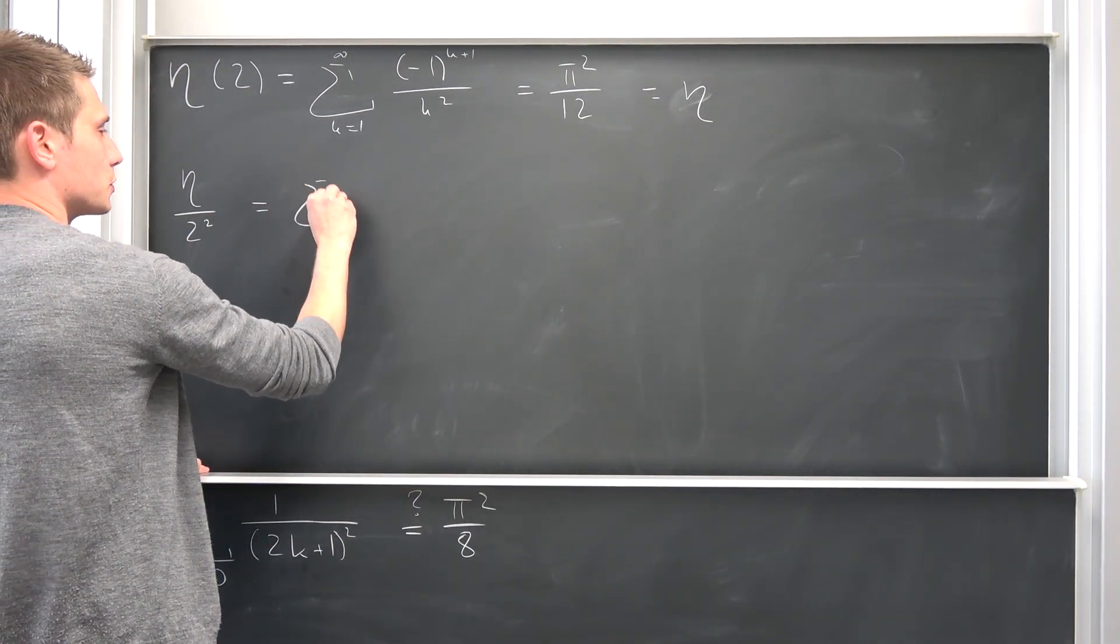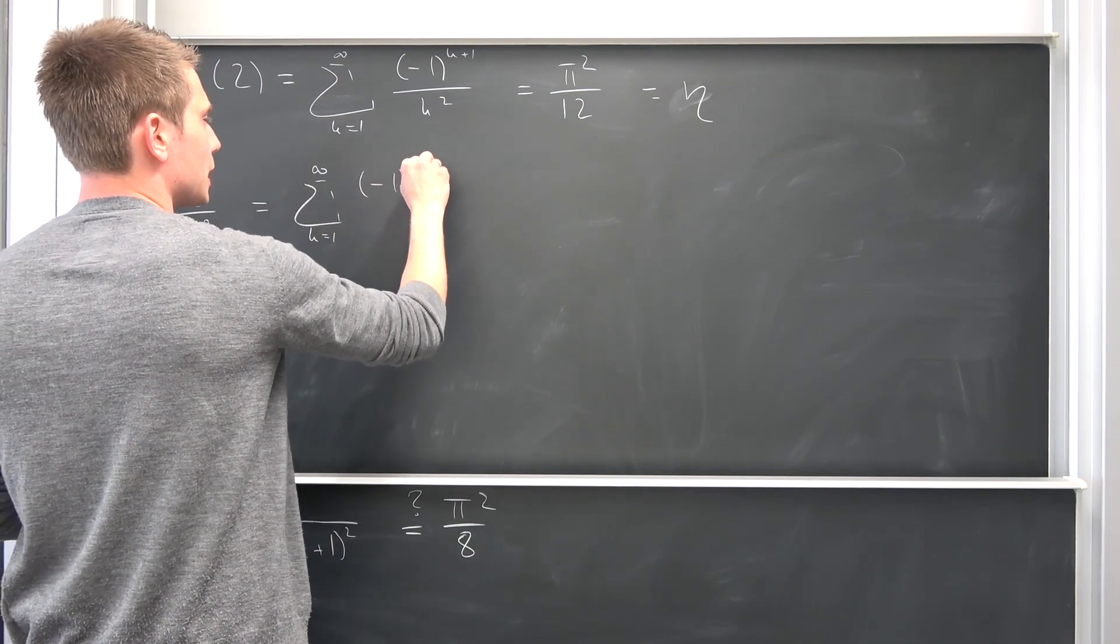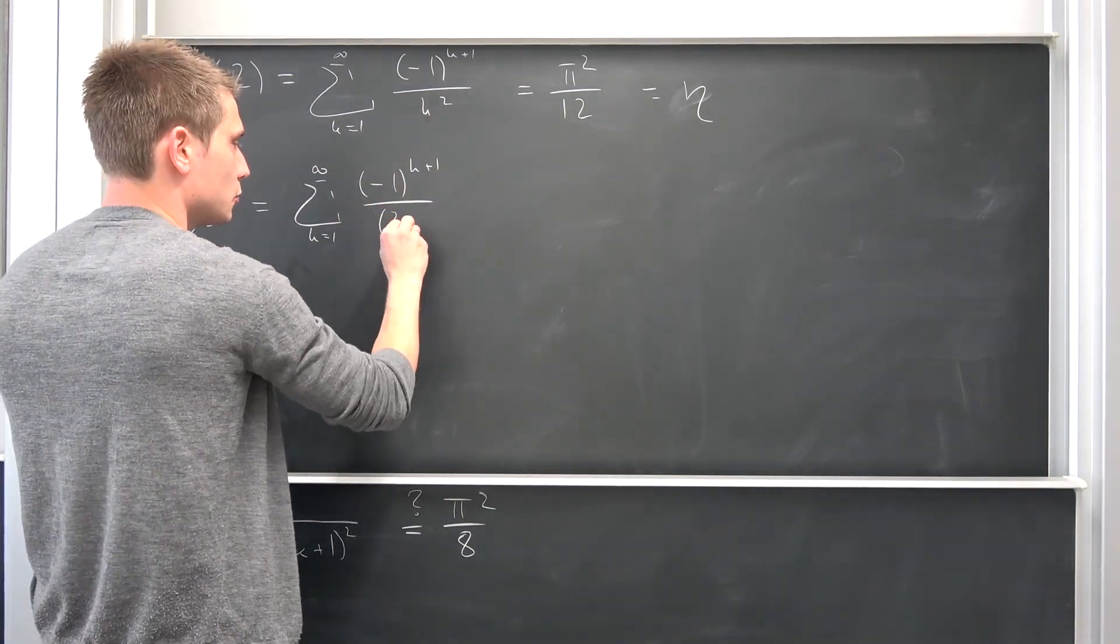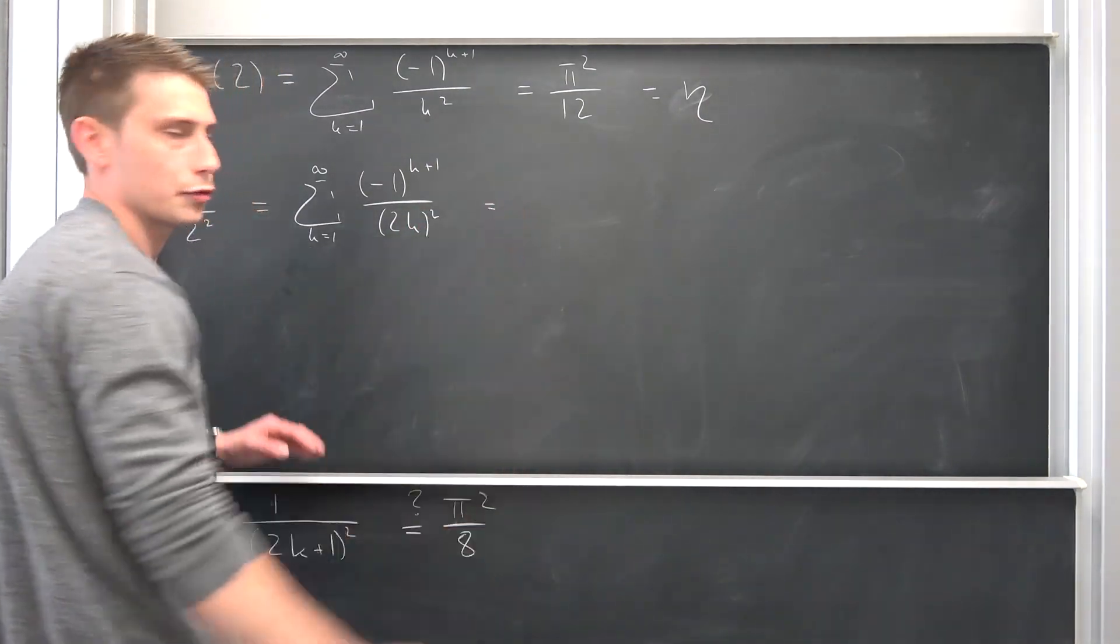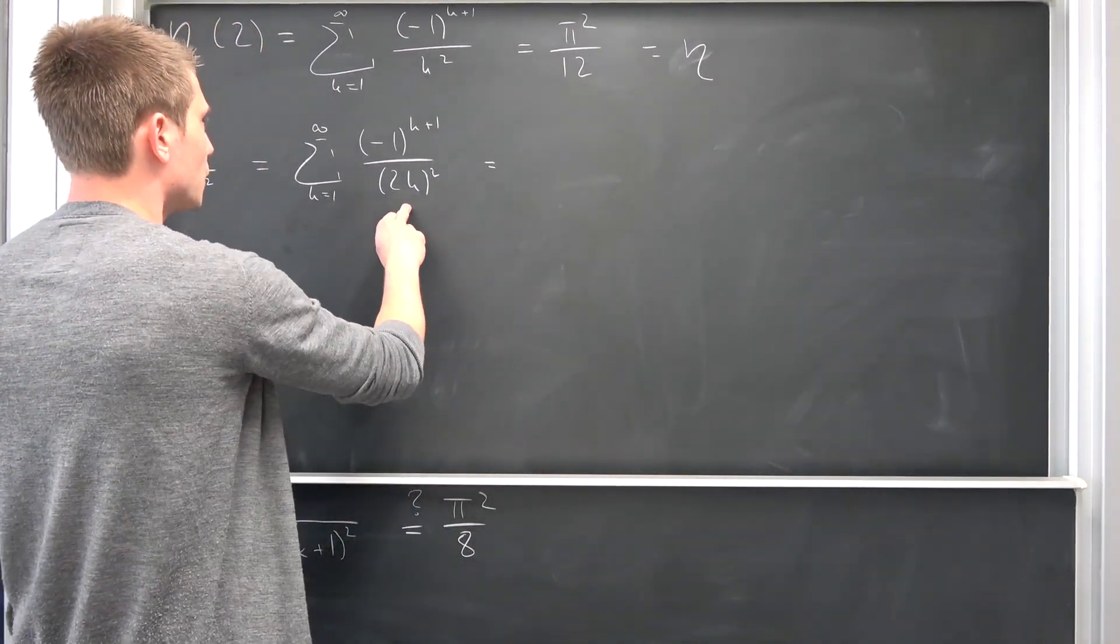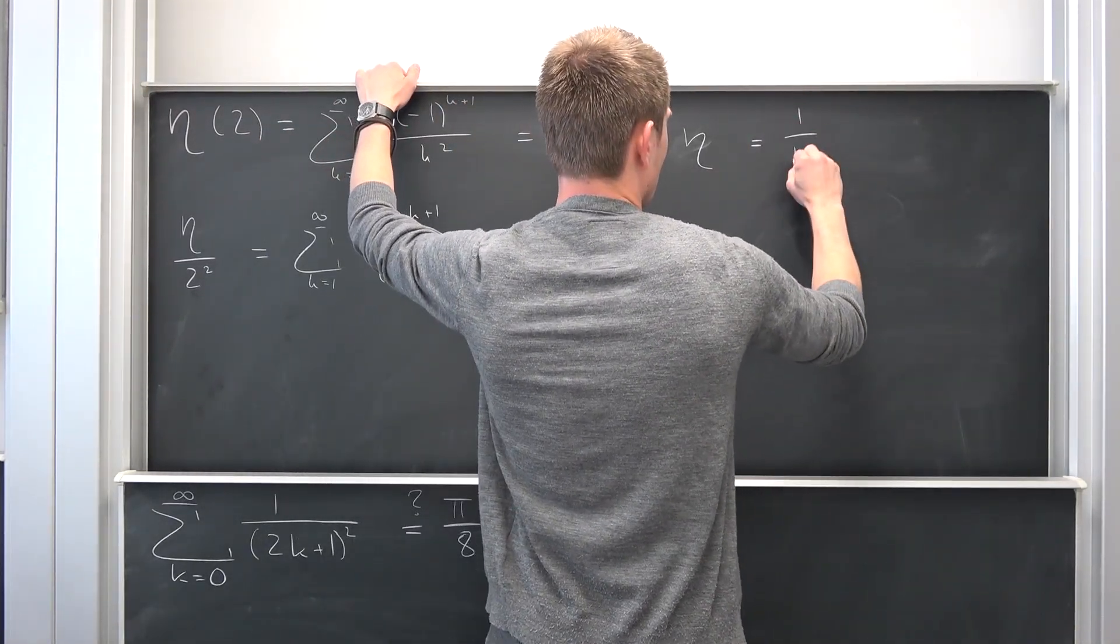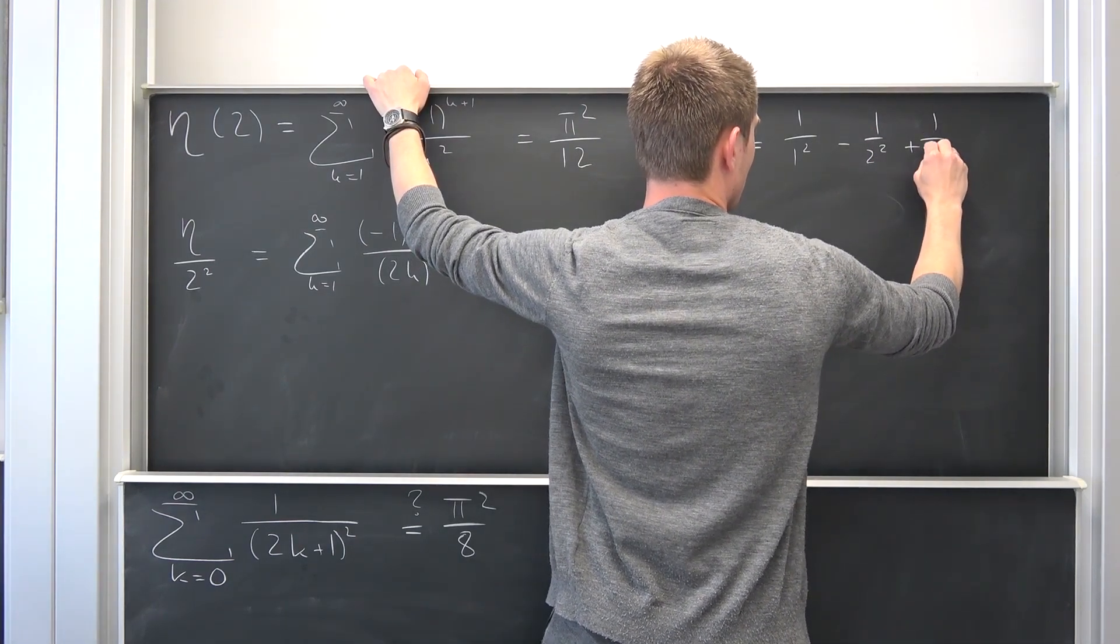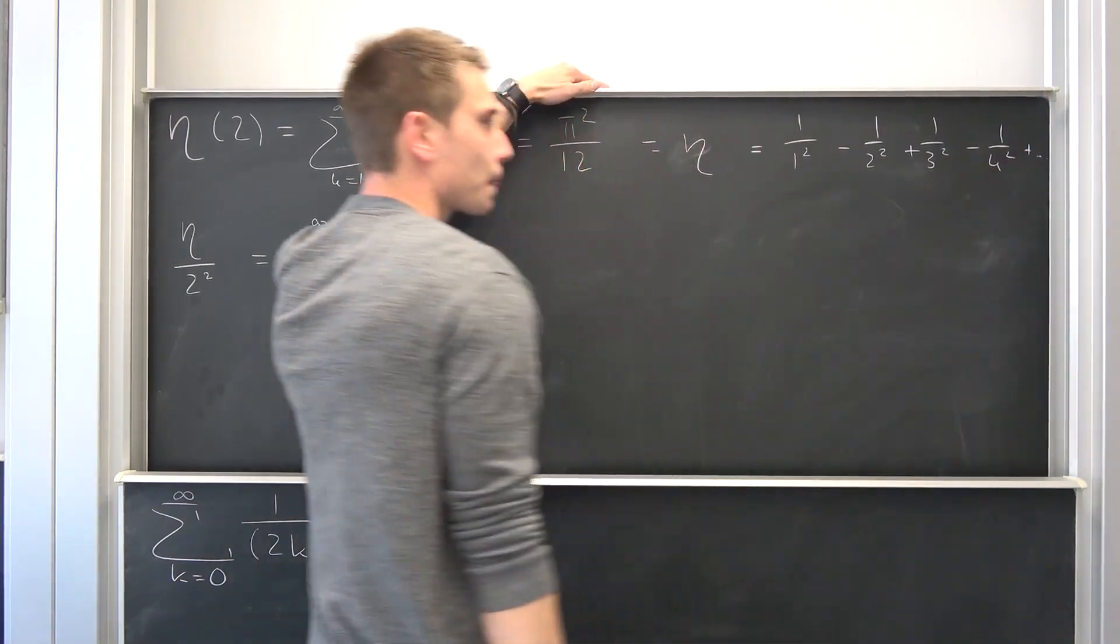This is going to evaluate to sum running from k equals 1 to infinity, negative 1 to the k plus 1 power over 2 squared and k squared. We can bring this together to 2 times k but squared. I can write out a few of those terms if you want. So this is going to give us, this up here was exactly 1 over 1 squared minus 1 over 2 squared plus 1 over 3 squared minus 1 over 4 squared, etc. This is what it is.